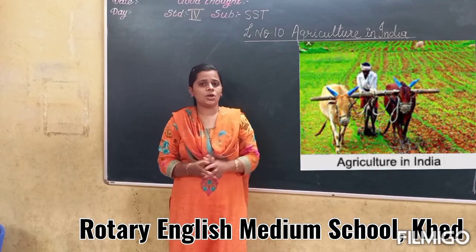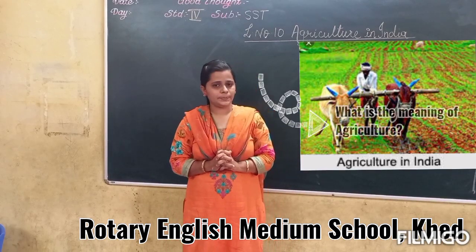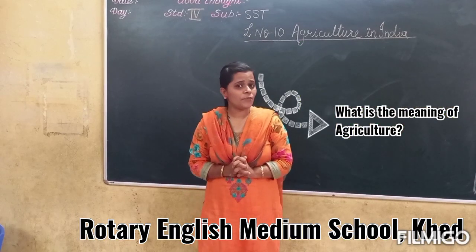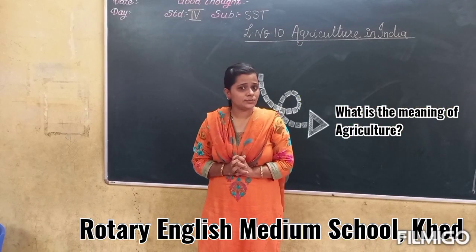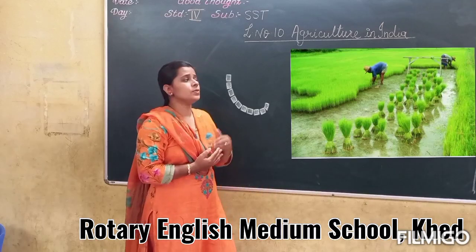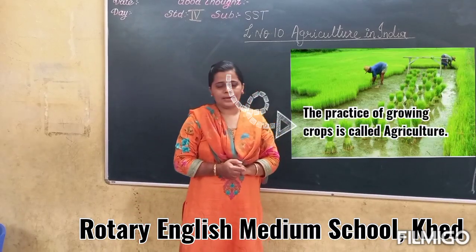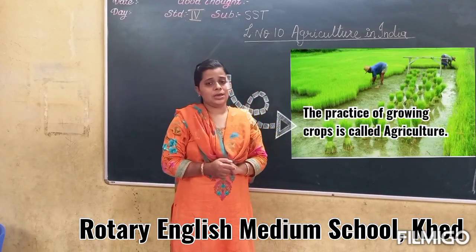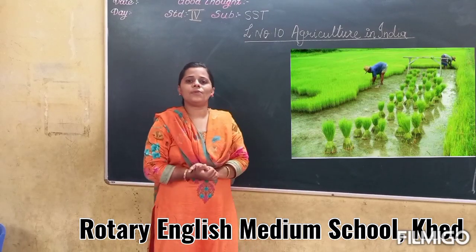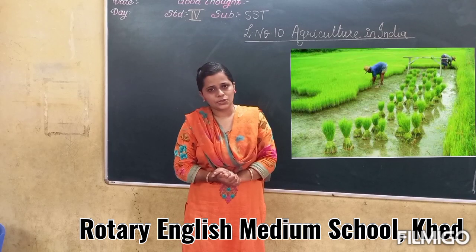Do you know what is the meaning of agriculture? Agriculture means the practice of growing crops. In simple words, we can say the cultivation of land is known as agriculture.